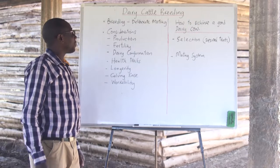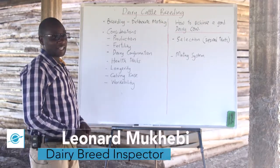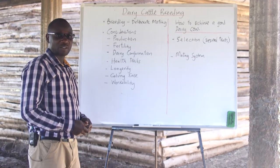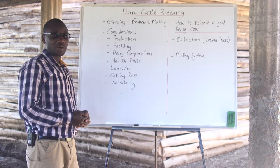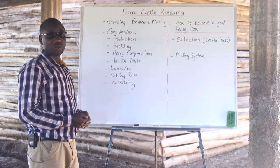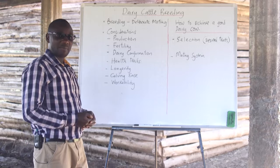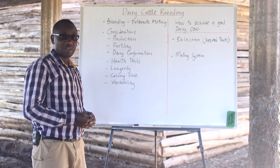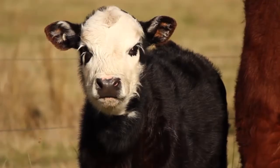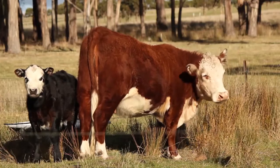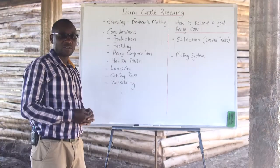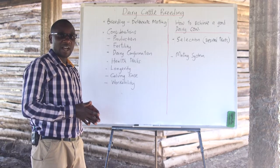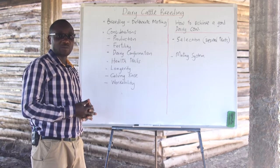Welcome to this session. We are going to talk about dairy cattle breeding. There is a very big difference between farmers who just keep animals and those who keep animals for breeding. Breeding is defined as a deliberate effort by the farmer to mate animals which are selected with an objective to achieve certain desired traits in the next generation. Dairy cattle breeding involves a careful choice of the sire and the dam to be mated in order to have a calf born with the desired traits.